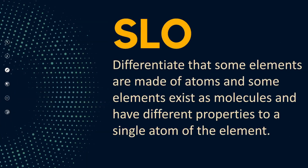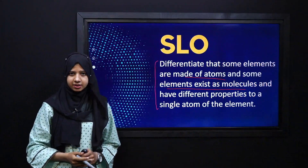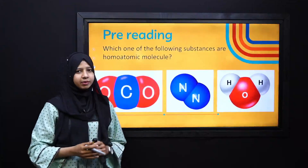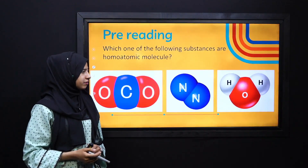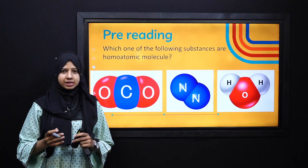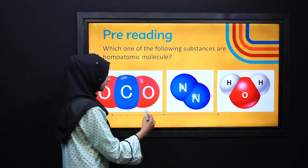In today's lecture we will cover the learning objectives. We will differentiate between elements that are made up of atoms and elements that exist as molecules. We will also discuss the different properties of elements so you can learn more about this. But before this, let's revise our previous knowledge.